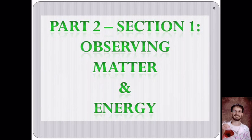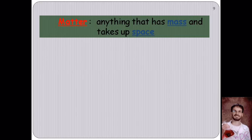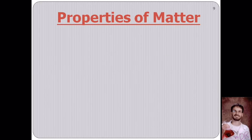Now we are going to move into a little bit more of chemistry, so we're going to talk about matter and energy. Matter by definition is anything that has mass and takes up space. Essentially, if you can feel it, touch it, push it, hit it, roll it — whatever — then it's going to be made of matter. So what are some properties of matter?